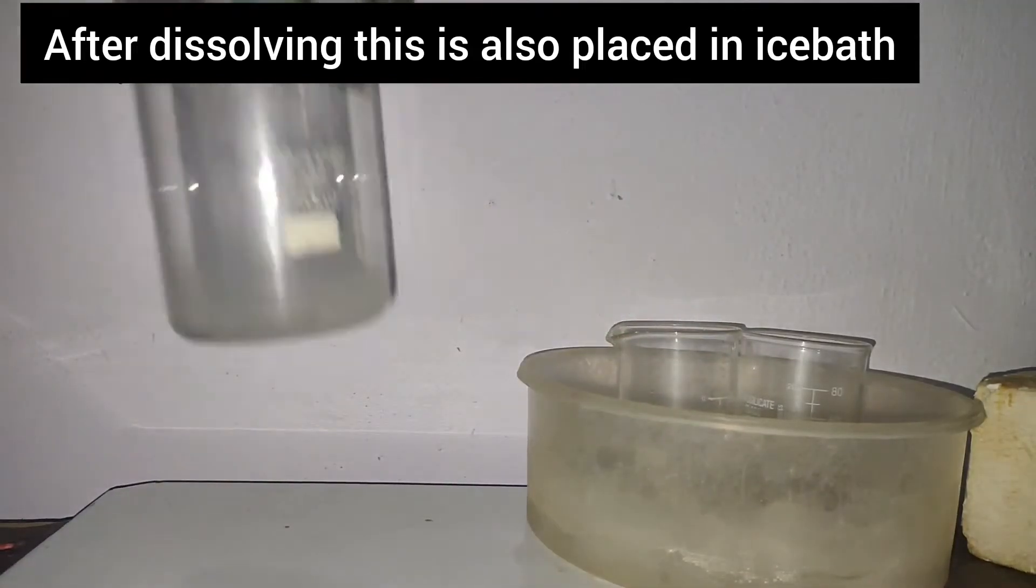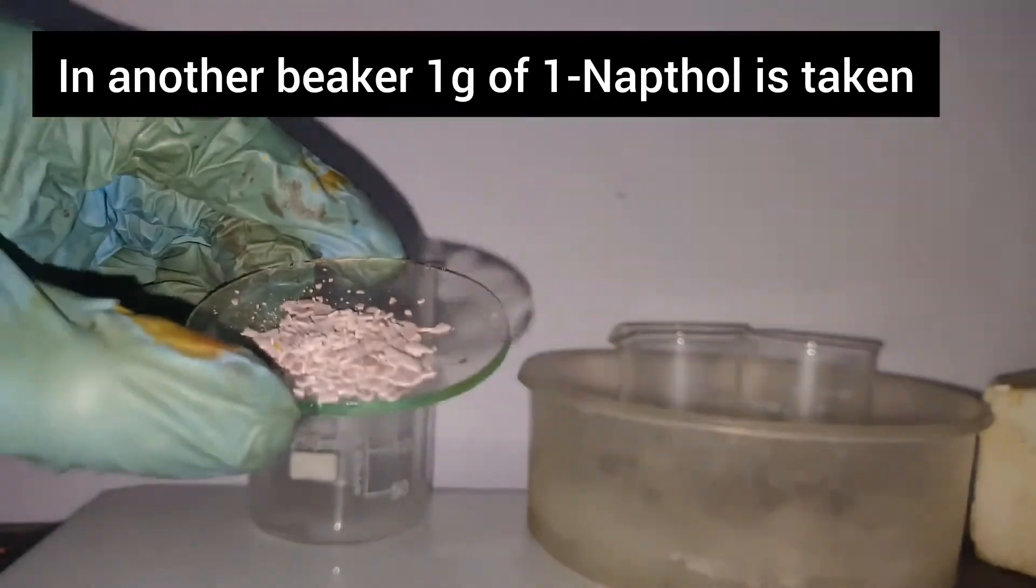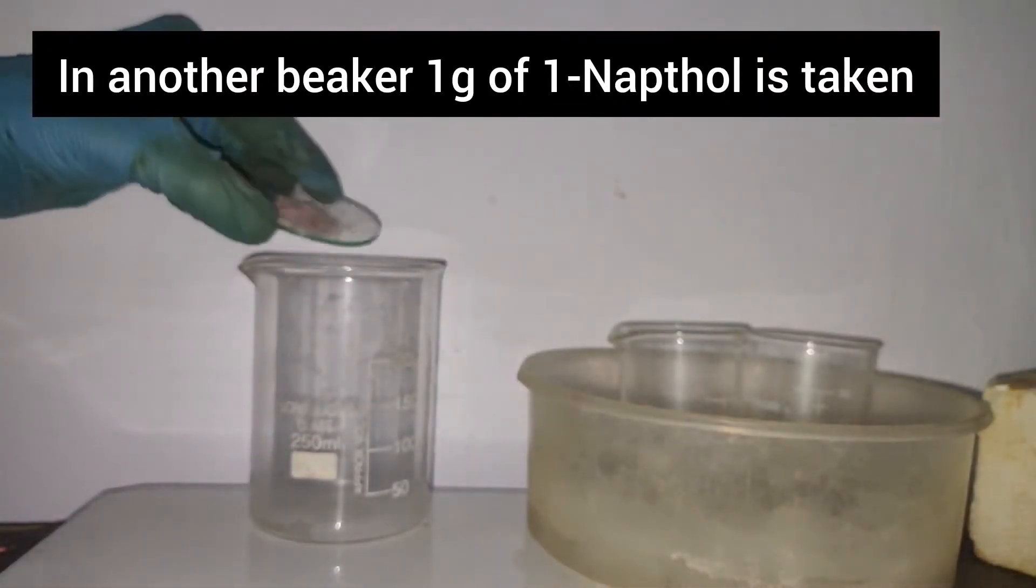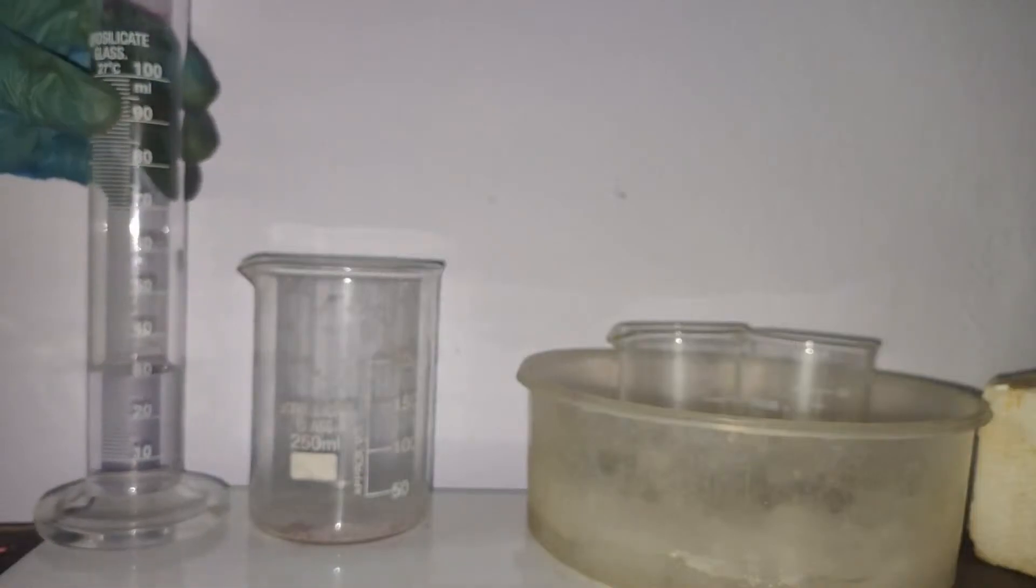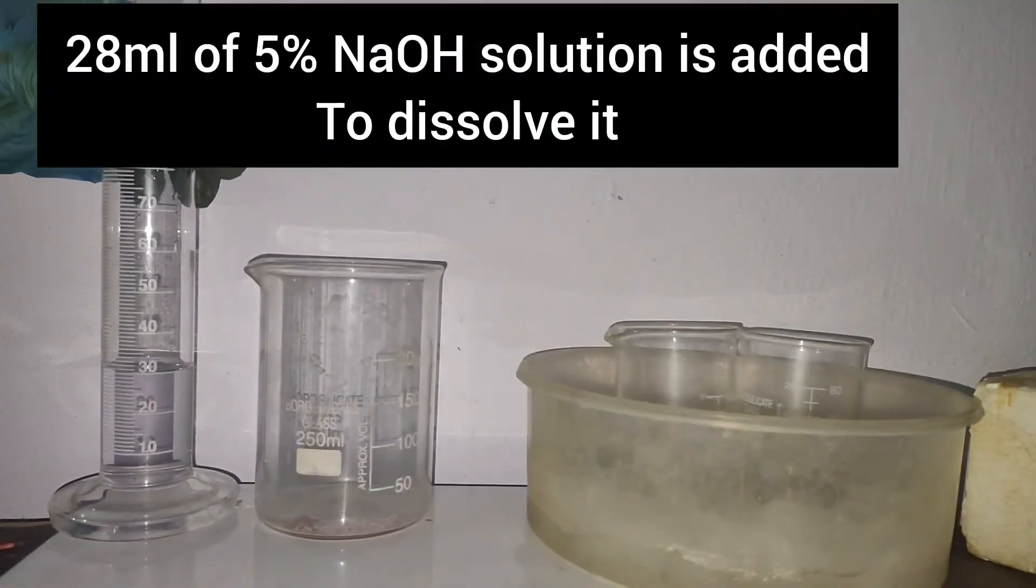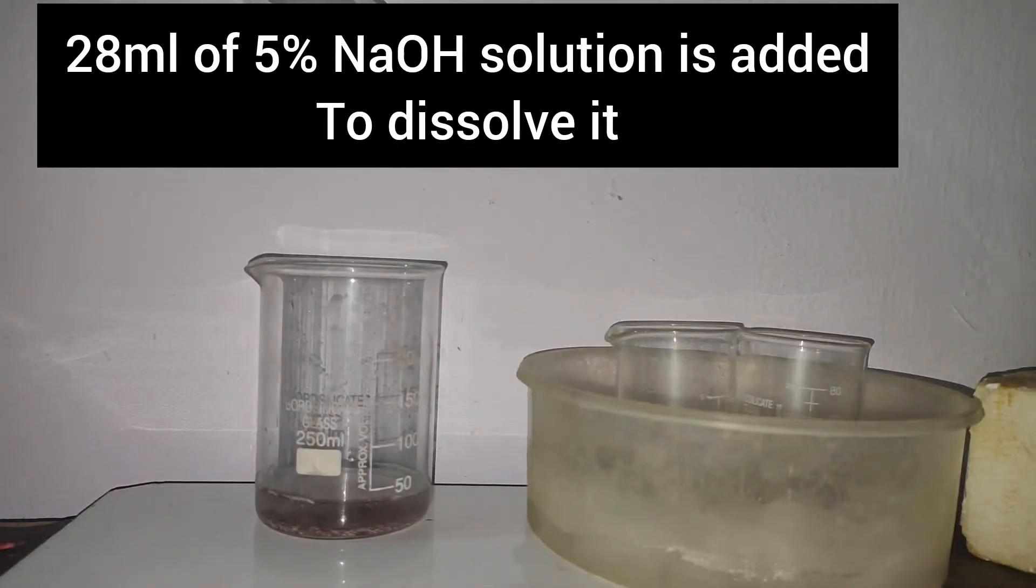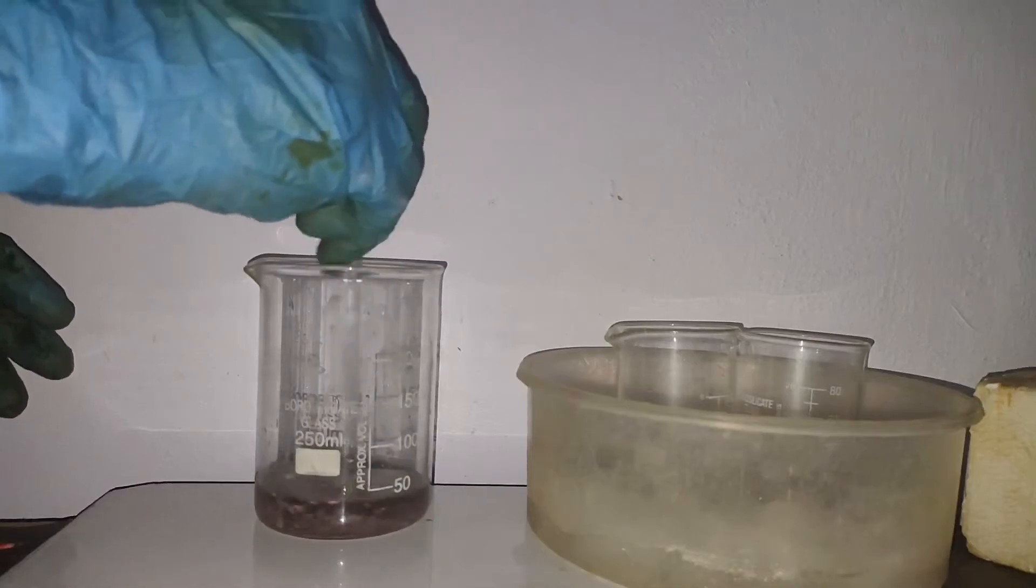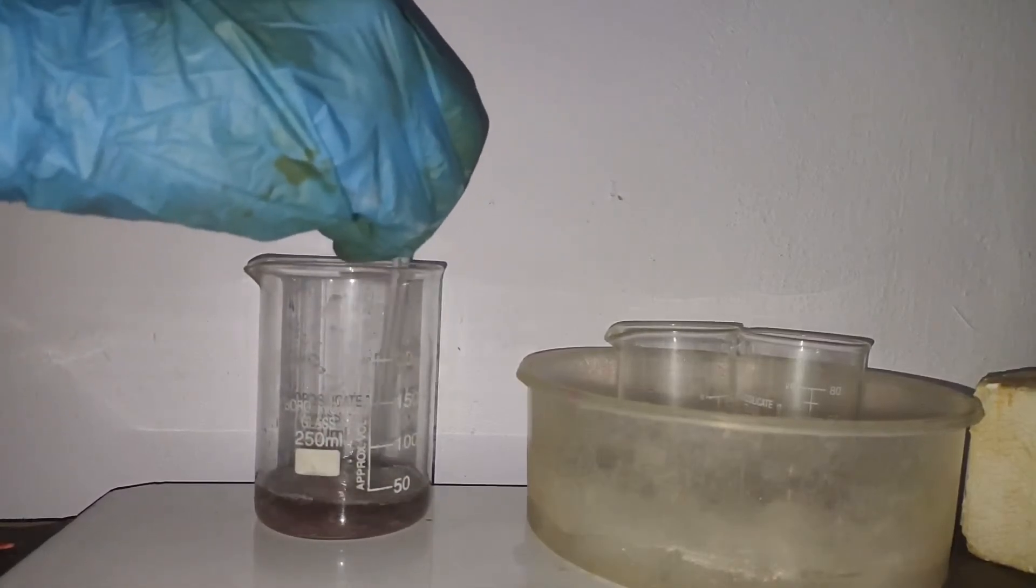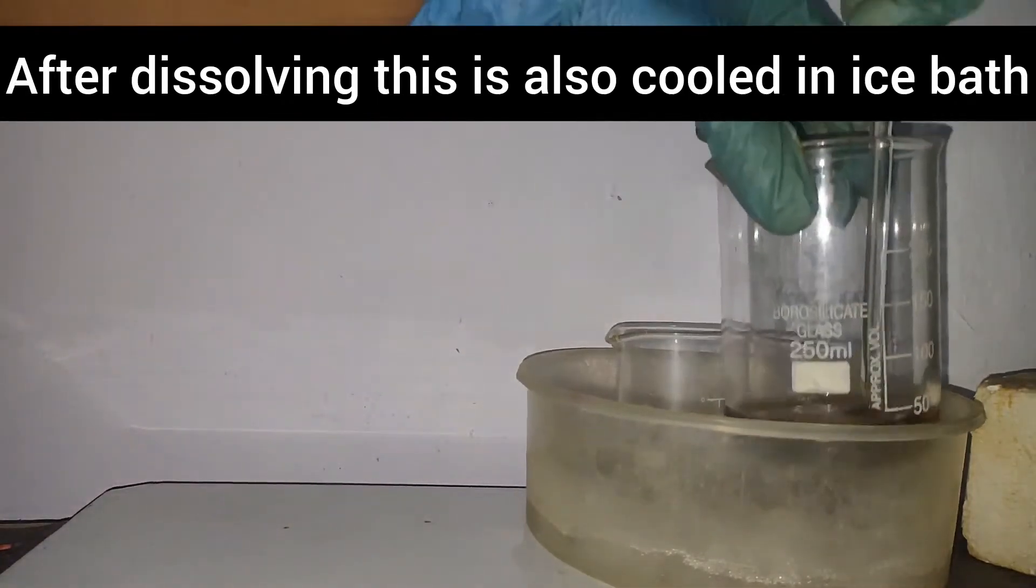Then a 250 ml beaker was taken. Inside that, 1 gram of 1-naphthol was added. To dissolve this, 28 ml of 5% NaOH solution was added and stirred to dissolve the 1-naphthol. After dissolving, this was also cooled in an ice bath.